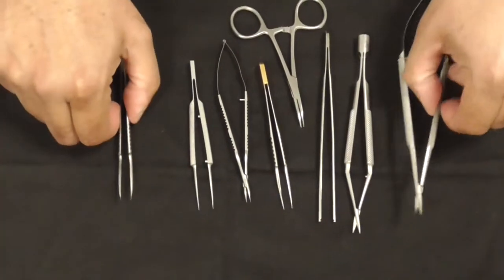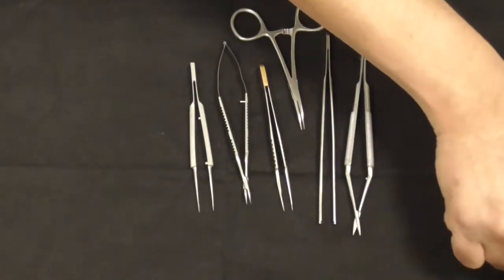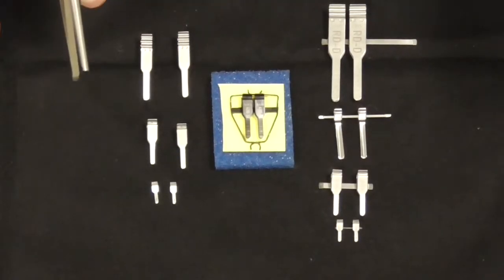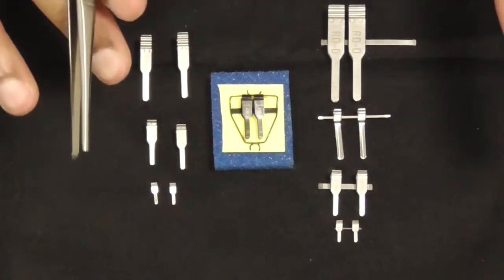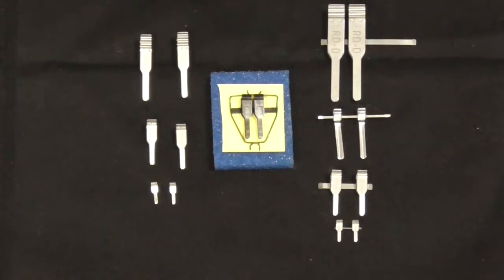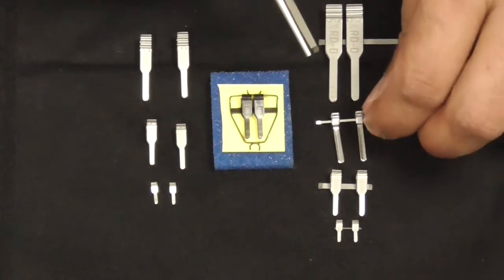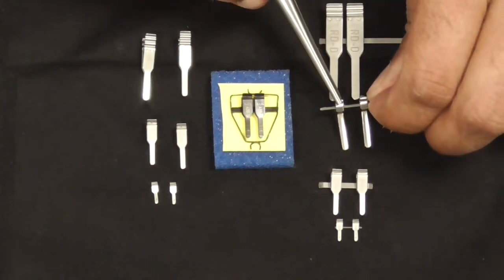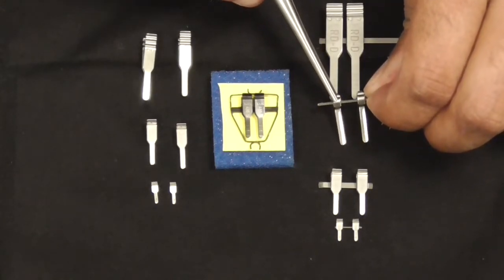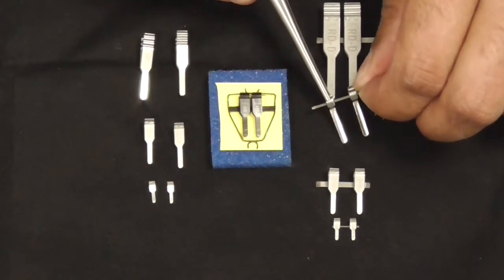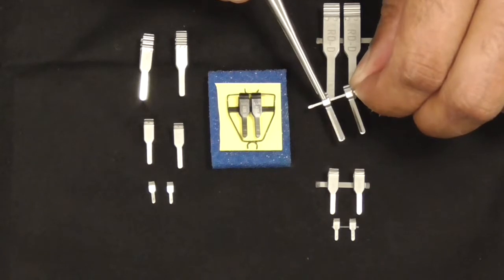So we're now going on to the microvascular clamps. The features all these clamps have in common is that they're non-crushing clamps and quite delicate instruments. Most of these, with the exception of the really big ones, need the clamp applicator to open and close. You can see the clamp applicator fits like that and opens and closes the clamp.